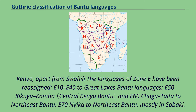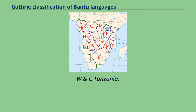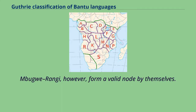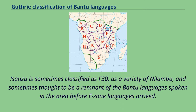Zone E covers Kenya. Apart from Swahili, the languages of Zone E have been reassigned: E10–E40 to Great Lakes Bantu languages, E50 Kikuyu-Kamba and E60 Chaga-Taita to Northeast Bantu, and E70 Nika to Northeast Bantu, mostly in Sabaki. Zone F covers western and central Tanzania. Much of F20 and F30, including the major language Sukuma, have been reclassified as Northeast Bantu, with Bangu to Rukwa and some others as Great Lakes. Mugwe-Rangi, however, form a valid node by themselves. Isanzu is sometimes classified as F30, as a variety of Nylamba, and sometimes thought to be a remnant of the Bantu languages spoken in the area before F-zone languages arrived.